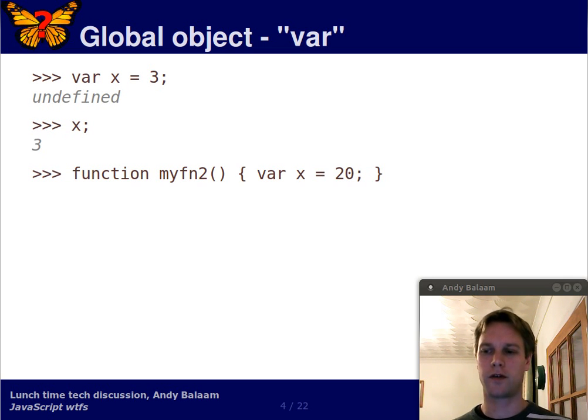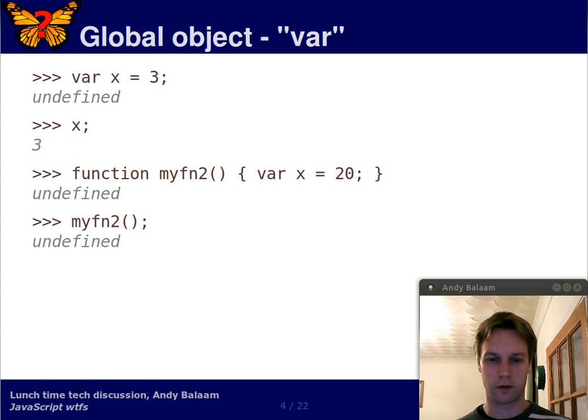Now, let's define another function, myfun2. And inside that function we're going to do almost exactly the same as what we did last time. We're going to set x to be 20. Right, that doesn't return anything. Then we call the function, which has an undefined return value. What is x now? Okay, so we've done almost what we did before. Well, let me tell you. What x is now is 3.